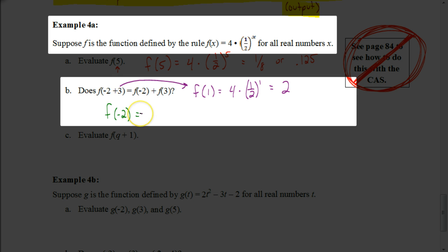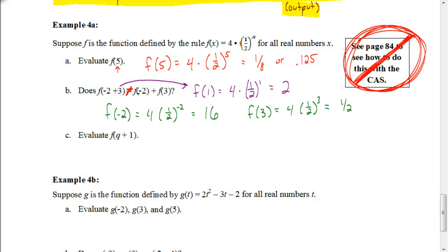So, let's start with F of negative 2. When I put negative 2 in my function, it's going to be 4 times 1 half to the negative second power. Well, when you do that in your calculator, you end up getting 16. Things aren't looking good right now because in order for me to add something to 16, it's got to be a negative number, and I don't think that's going to happen here. Let's find out F of 3 equals 4 times 1 half cubed, and surely that's not going to be a negative number. It ends up just being 1 half or 0.5. If I add 16 and 1 half together, I get 16 and 1 half or 16.5. I don't get 2. So, these are not equal to each other. And that would be your answer.